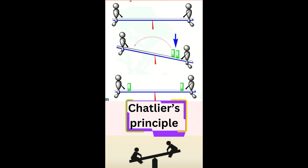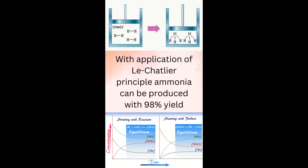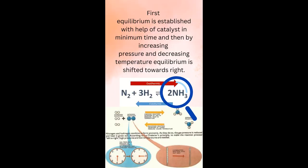With application of Le Chatelier's principle, ammonia can be produced with 98% yield. First, equilibrium is established with the help of a catalyst in minimum time, and then by increasing pressure and decreasing temperature, the equilibrium is shifted towards the right.